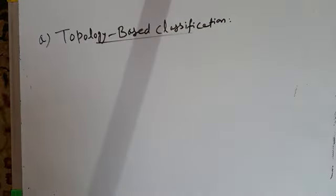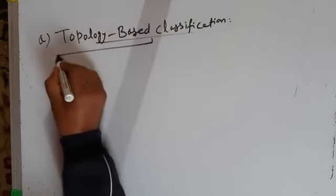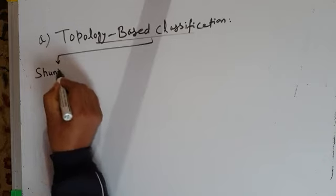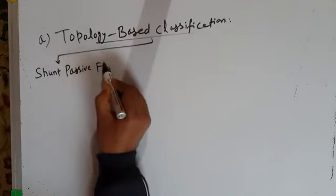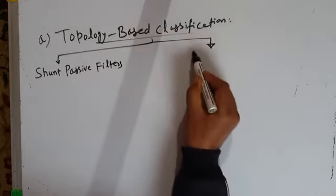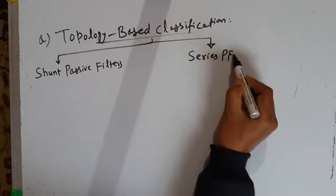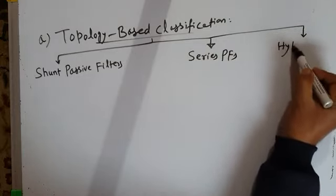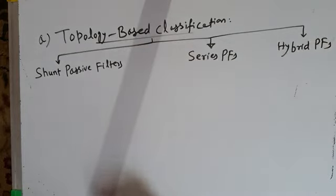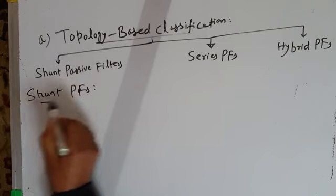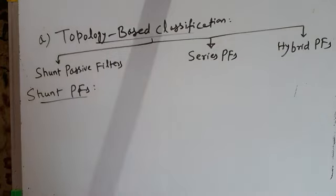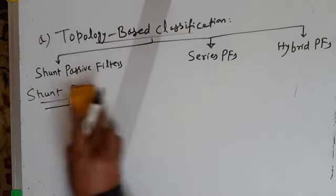Based on topology, passive power filters are classified as: shunt passive filters, series passive filters, or hybrid passive filters. Shunt passive filters are further classified into band-pass or tuned filters, and high-pass or damped filters.